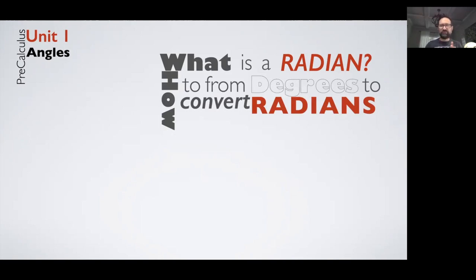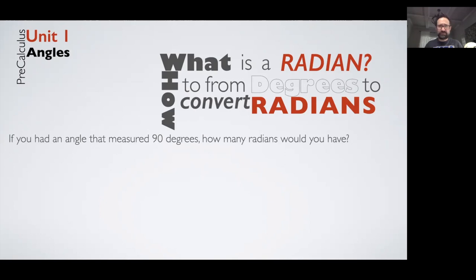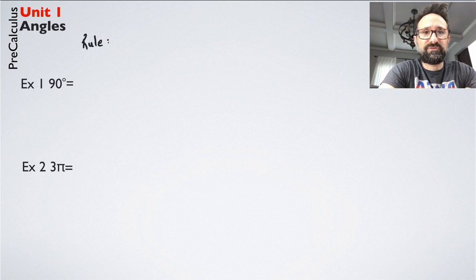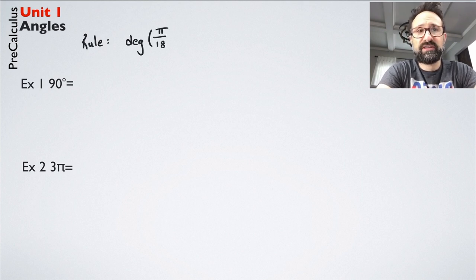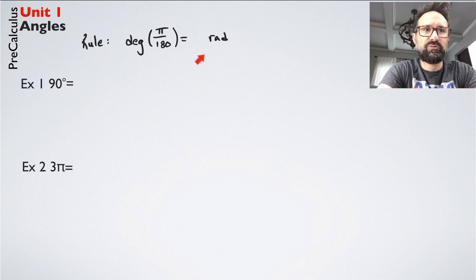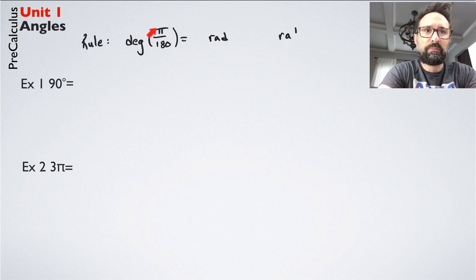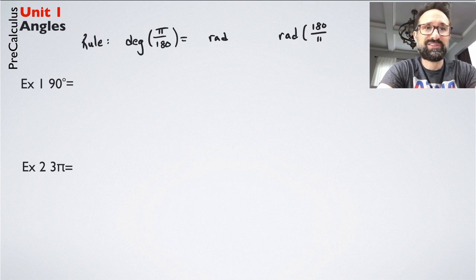Let's talk about conversions — going back and forth between degrees and radians. If you have an angle of 90 degrees, how many radians is that? Other examples to convert are 270, 30, and 24 degrees into radian measure. To go from degrees to radians, multiply by pi over 180. Simplify the result and you'll end up with radians — probably with a pi in your answer.